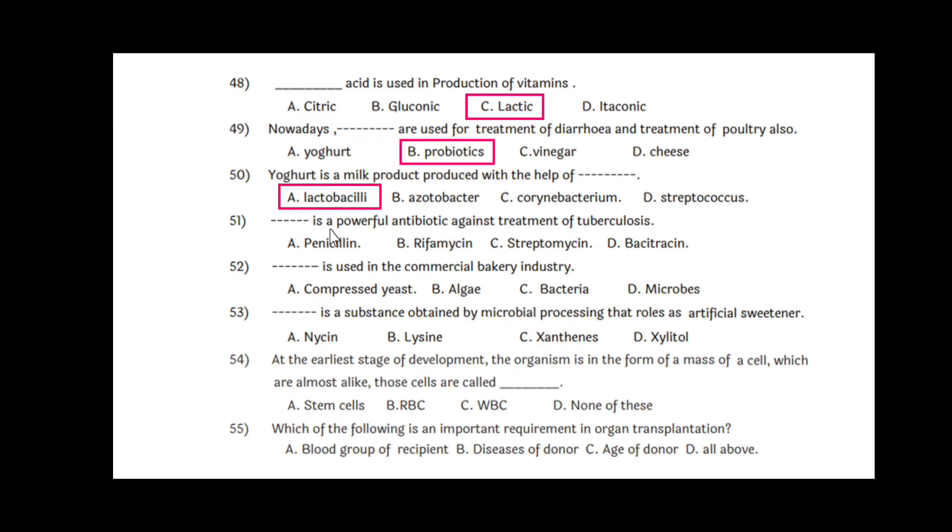Question 50: Yogurt is a milk product produced with the help of dash, and that is lactobacillus, option A. Question 51: Dash is a powerful antibiotic against treatment of tuberculosis, that is TB, and the option is rifampicin, option B. Question 52: Dash is used in the commercial bakery industry, and that is compressed yeast, option A. Question 53: Dash is a substance obtained by microbial processing that works as artificial sweetener, and that is xylitol, option D.